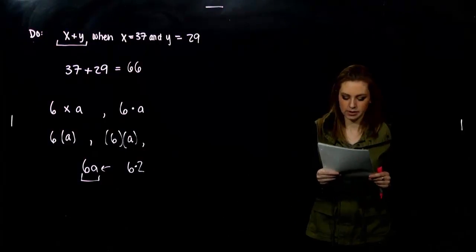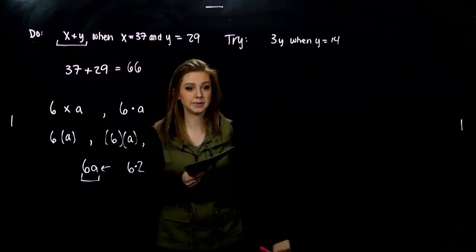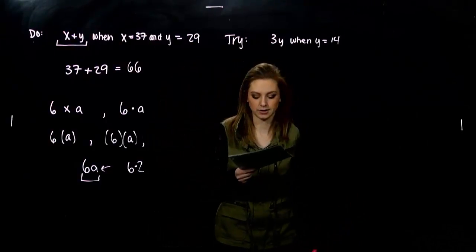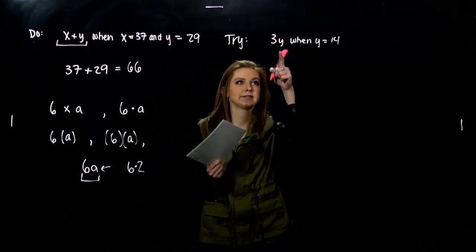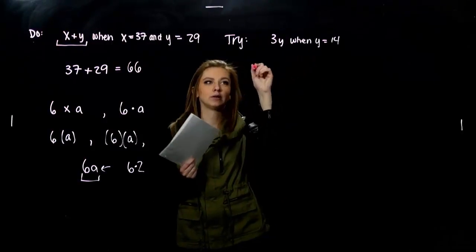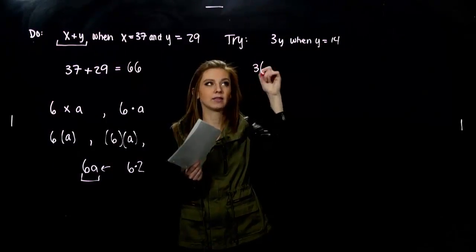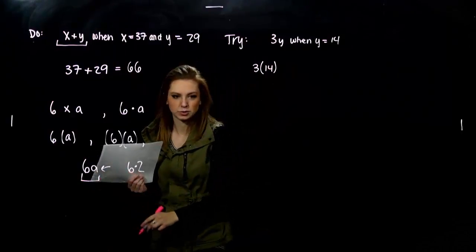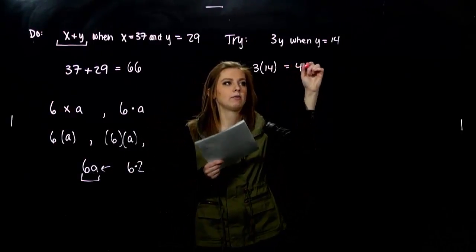Evaluate 3y when y is 14. We're simplifying that expression or evaluating that expression. We're not asked to solve for anything. So wherever I see a y in my expression, I'm plugging in 14. So since we both have constants here now, I need to indicate that I have multiplication going on right there. We can't just write them really close to each other. So 3 times 14, we get out 42.